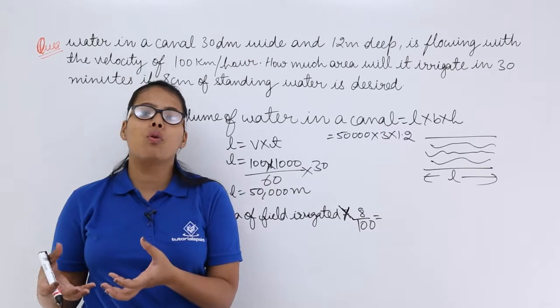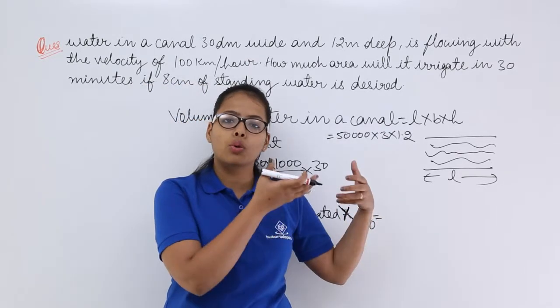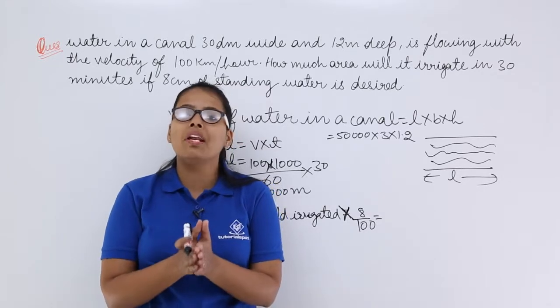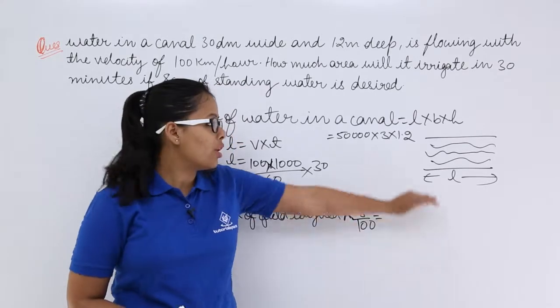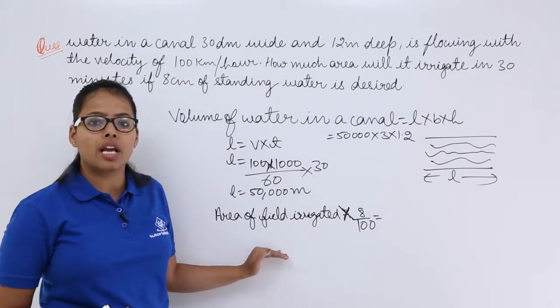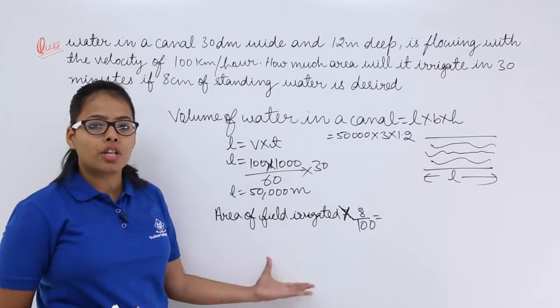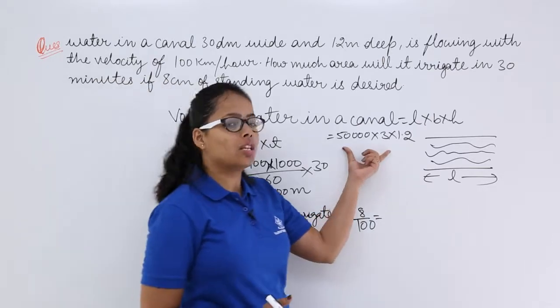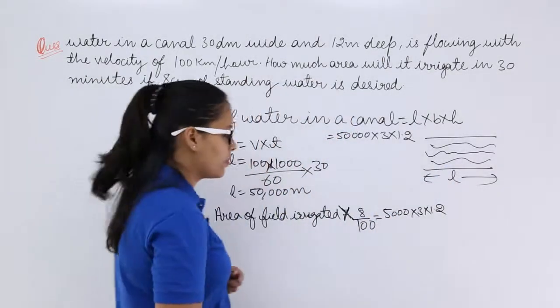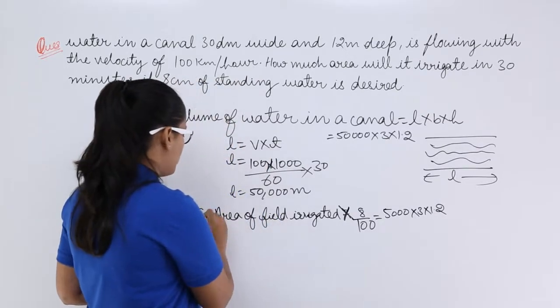So this will be the volume of water present in the field and you know that if you are using all of the volume of the water to irrigate the field then you are not losing water anywhere. Volume of the water will remain constant. So here this whole volume of the water will be allotted to this area to this field. So that's why I'll equate this with this much volume of water.